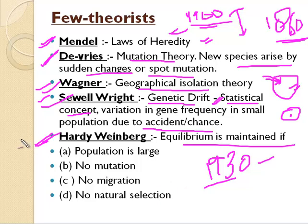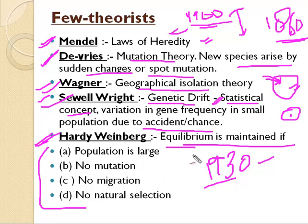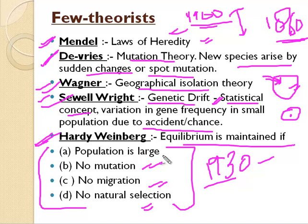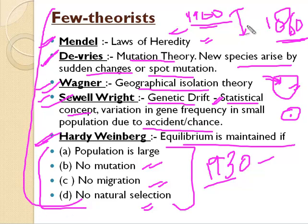Hardy-Weinberg equilibrium is another statistical and mathematical model, given by two scientists, Hardy and Weinberg. According to them, population equilibrium is maintained if four conditions are met: the population is large, no mutation occurs, no migration occurs, and no natural selection occurs. If any of these changes occur — mutation, migration, natural selection, or if the population is very small — there will be changes in gene frequencies and the total gene pool, leading to evolution. These are the key theorists to include when writing about the synthetic theory of evolution.